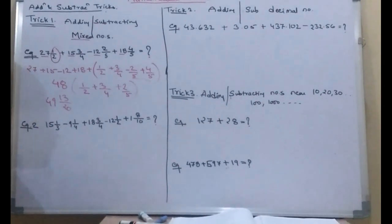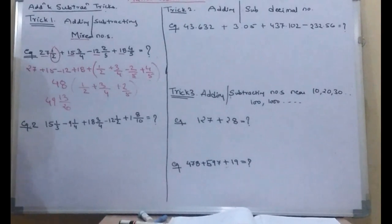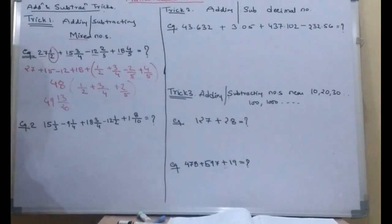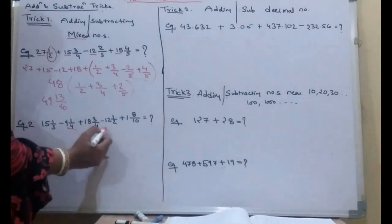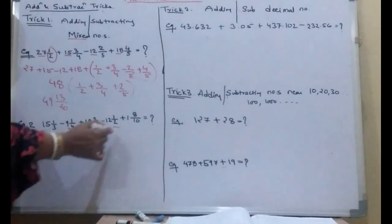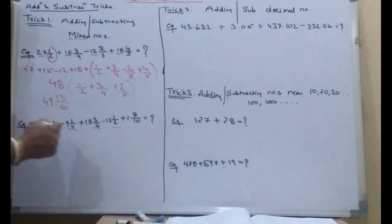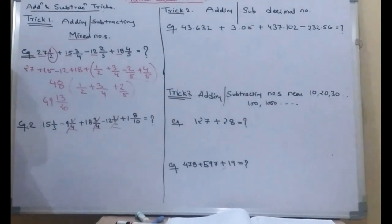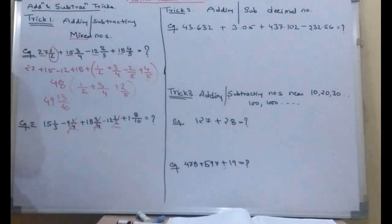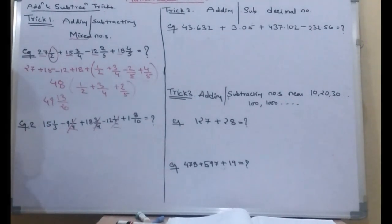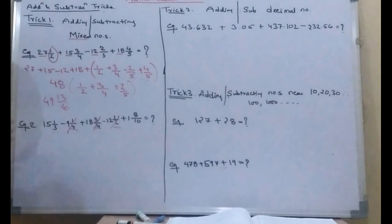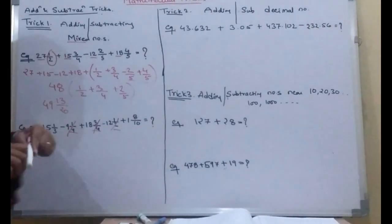Another tip with mixed numbers is to cancel out matching fractional parts first. So we will cancel that part — like in example number 2, we are looking at minus 1/4, plus 3/4, and minus 1/2. If we add these three fractional parts, the result is zero. So we have cancelled out these three parts, and after that, we will add or subtract the whole number parts. So this is our trick number 1.